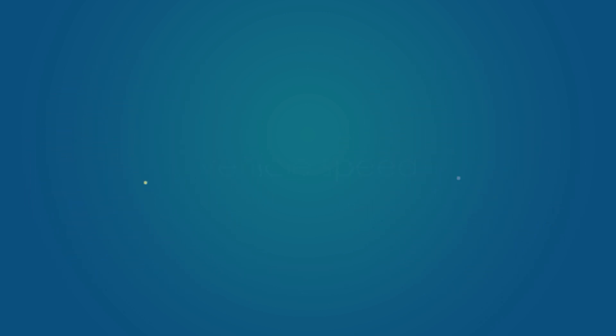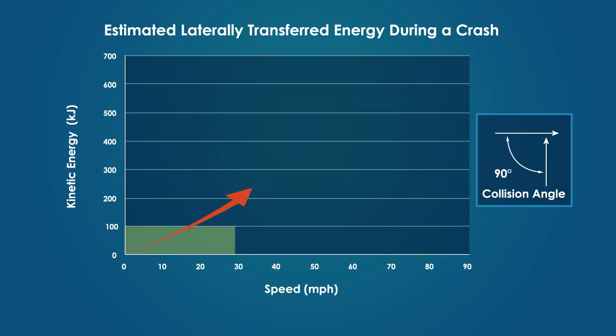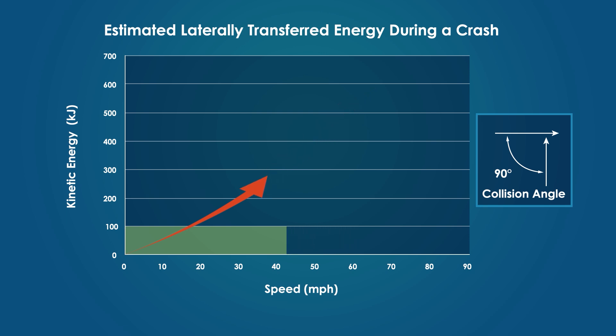Next is vehicle speed. As speed increases, the amount of energy that can be transferred in a collision increases exponentially, creating a higher likelihood for severe crashes. Intersection designs that effectively slow vehicles through conflict point areas are relatively safer.